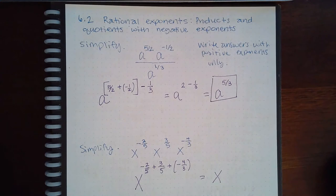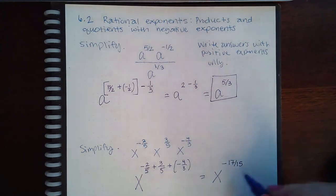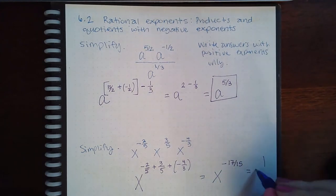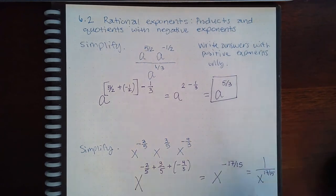So negative two fifths plus three fifths plus a negative four thirds. I end up with negative 17 over 15. Now this is a negative exponent, so I do have to rewrite it as one over x to the positive 17 over 15.